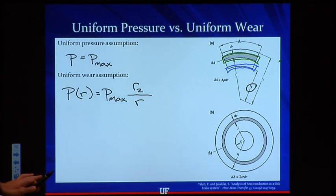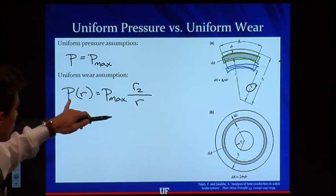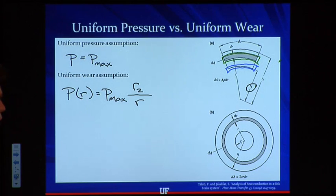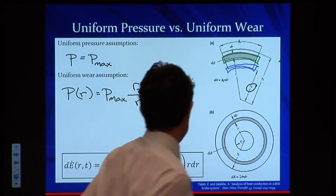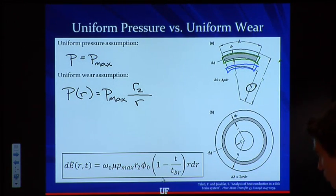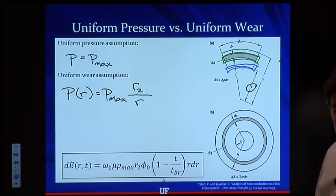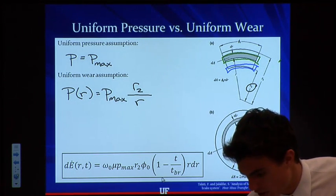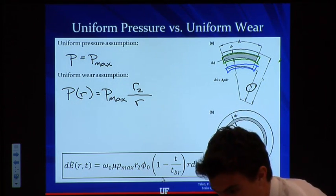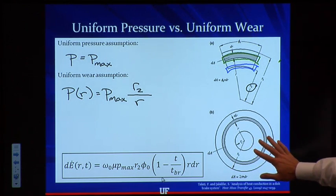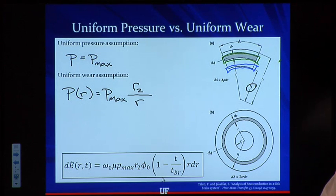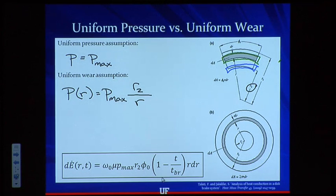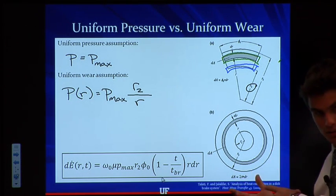We're going to use the uniform wear assumption because it's most common. Plugging that expression for P into the previous differential equation, we get the differential heat generation as a function of r and t: dĖ = ω₀·μ·P_max·R_I·φ·(1 - t/t_brake)·r·dr. This can be integrated to get the final heat generation for the pad. This is a much more in-depth analysis than what's in your book. An easier approach would be to just say that all of the kinetic energy in the car is converted to heat in the brakes. That will get you pretty close, but if you want to do something rigorous, this would be the method to use.